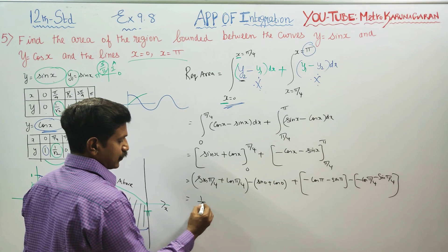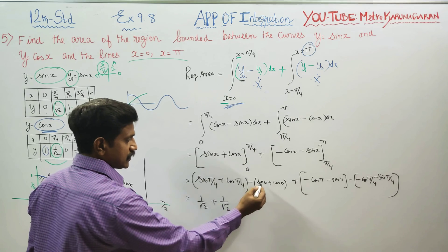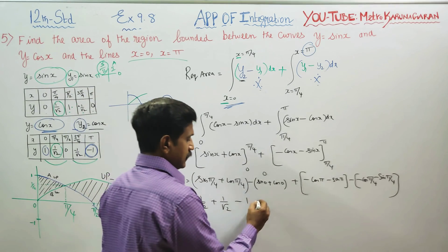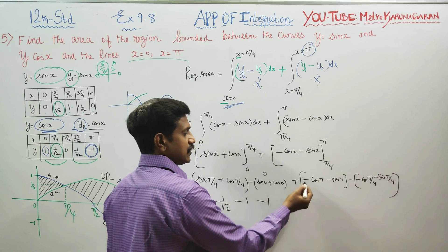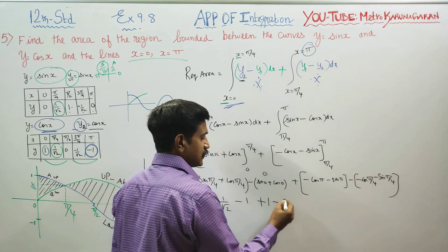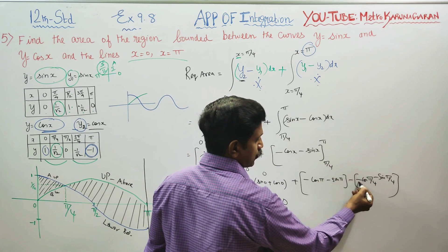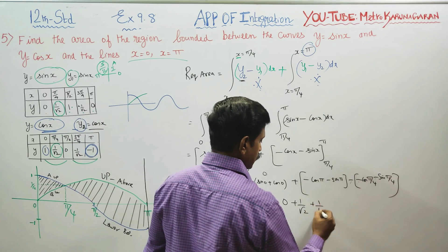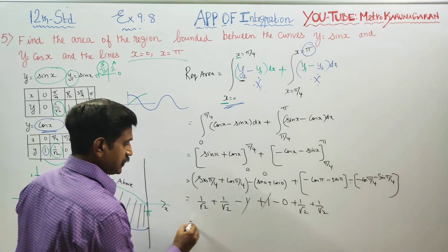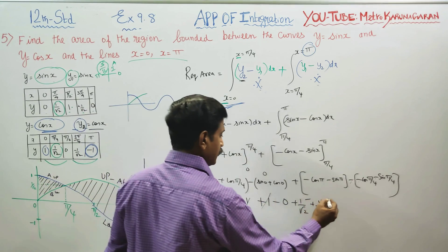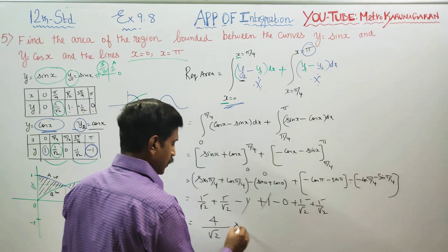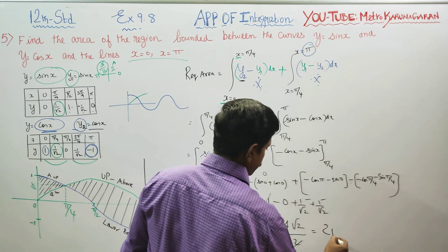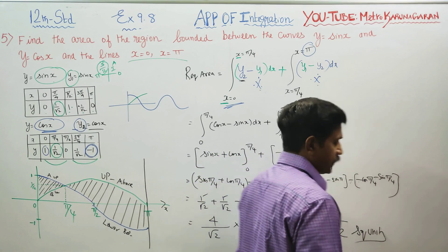Substituting values: sin π/4 = 1/√2, cos π/4 = 1/√2, sin 0 = 0, cos 0 = 1, cos π = −1, sin π = 0. After substitution and simplification, taking LCM and combining terms, we get 4/√2. Multiplying by √2/√2 gives 4√2/2, which simplifies to 2√2.